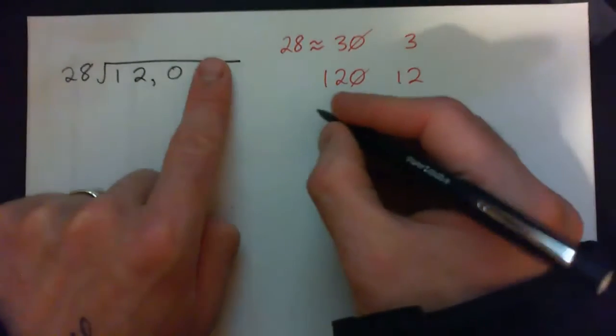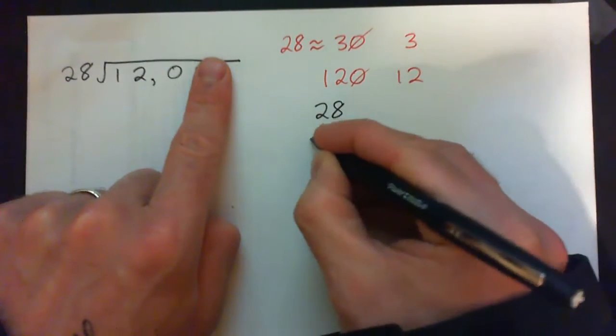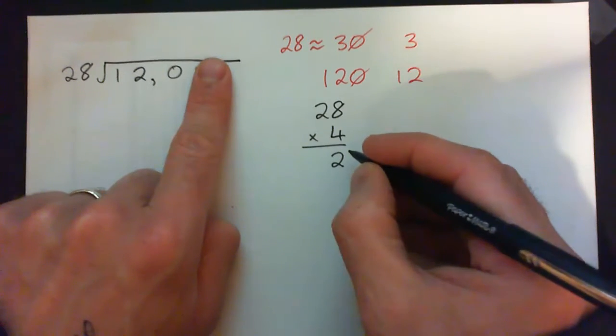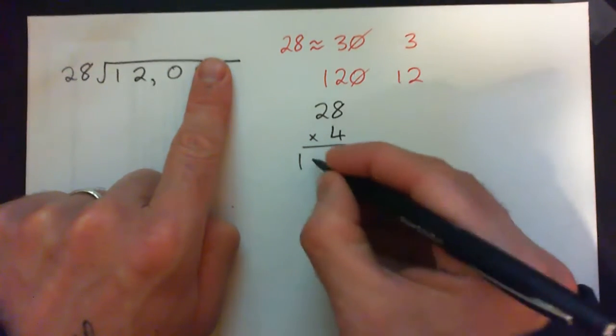4 times. So we've got to check that. 28 times 4. 4 times 8 is 32, carry the 3. 4 times 2 is 8 plus 3, 112.